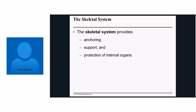A major player in movement is our skeletal system, which provides three main things. First, anchoring — it gives a spot for muscles to anchor, with tendons attaching around our skeleton. Second, support — without the support of something like our pelvic girdle, a lot of our lower abdominal organs would sink down. Third, protection — things like our ribs protect vital organs like our heart, so we can play soccer without worrying about getting our heart damaged directly by a soccer ball.